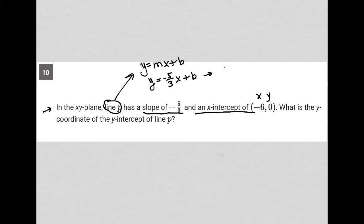If y is zero and x is negative six, then I still have plus b here. I still have zero here. This would turn into negative five times negative six is positive 30.